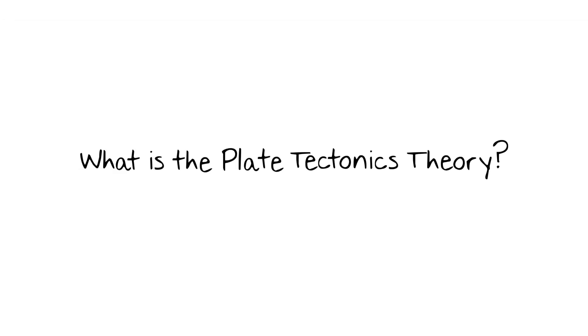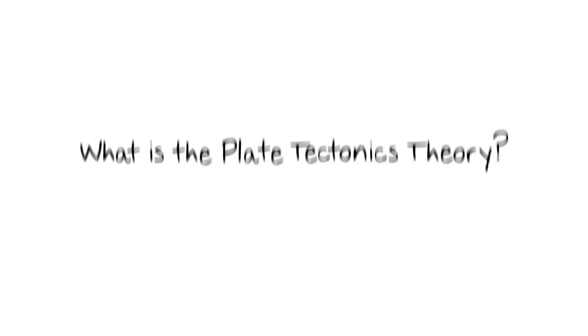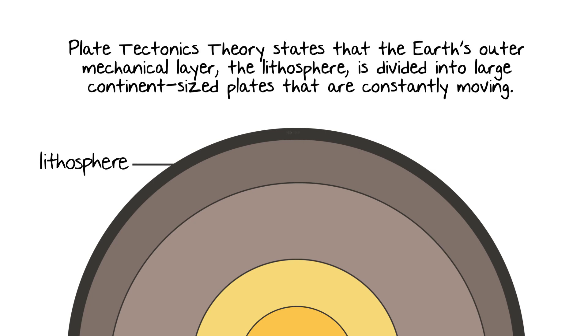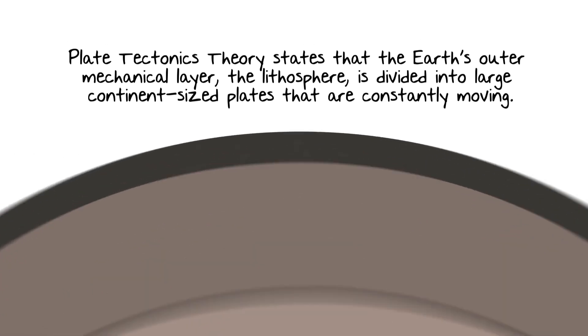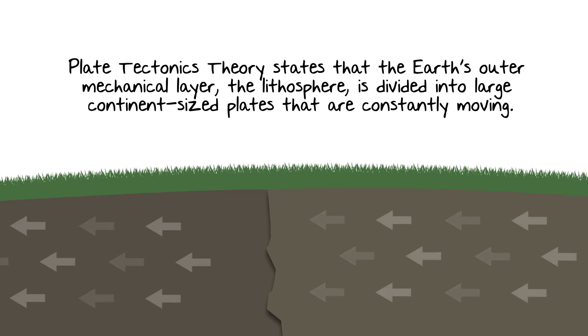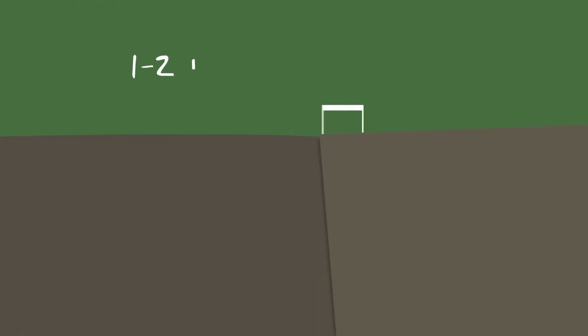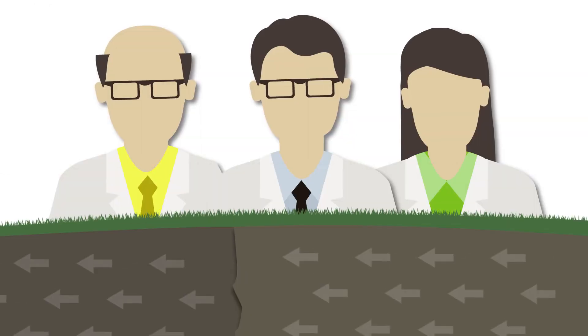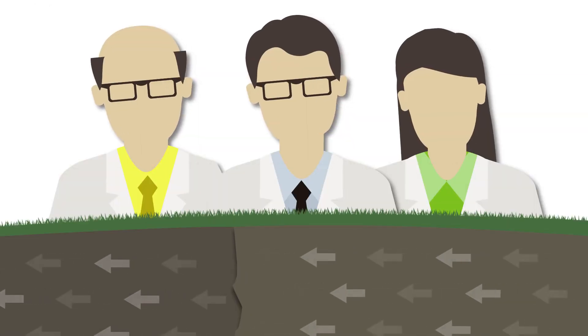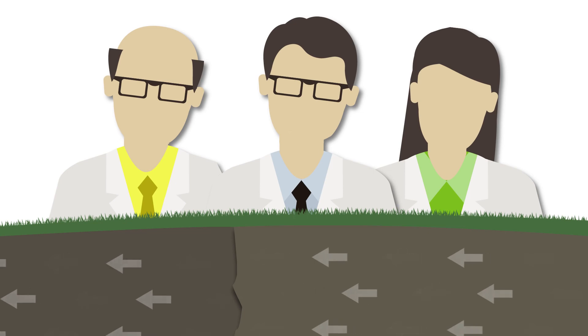So what exactly is the plate tectonics theory? Well, it states that the Earth's outer mechanical layer, the lithosphere, is divided into large continent-sized plates that are constantly moving. How fast are they moving? Pretty slowly actually, around 1 to 2 inches per year. Which is why it was so hard for scientists 100 years ago to wrap their heads around the idea.